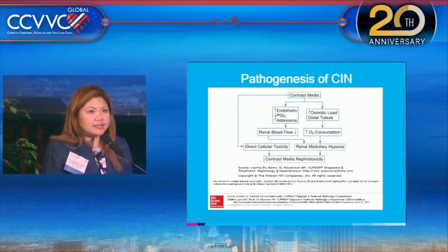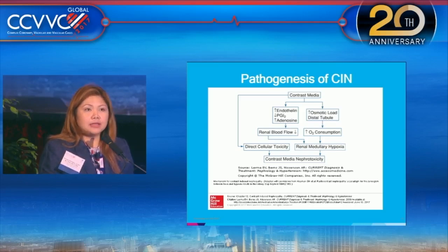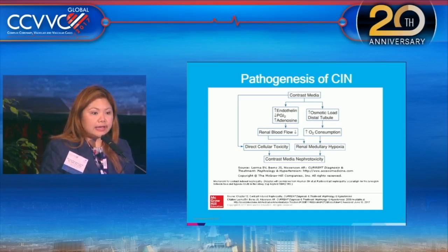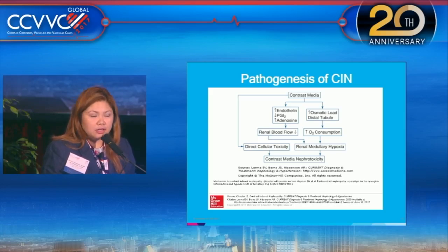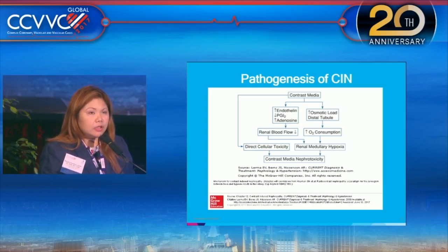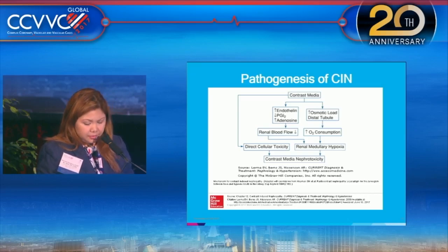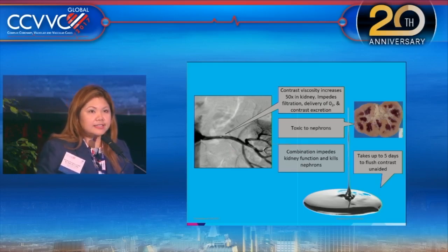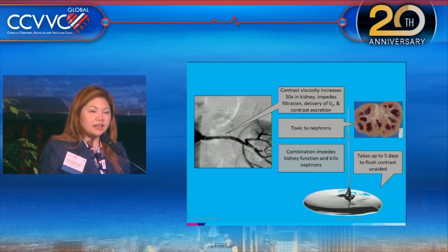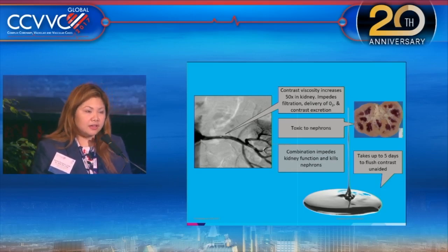For a quick overview of the pathogenesis of contrast-induced nephropathy: there are several theories, but they all agree that contrast affects the kidneys through direct cellular toxicity and reduced oxygen supply, causing hypoxia and nephrotoxicity. Contrast is viscous and thick, increasing its concentration in the kidney and making it harder to excrete. If a patient already has reduced renal function and you add a nephrotoxic agent, it further impairs the kidneys.